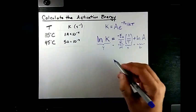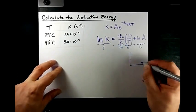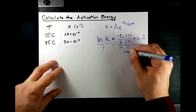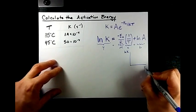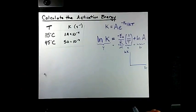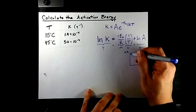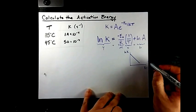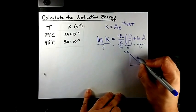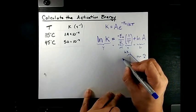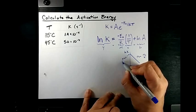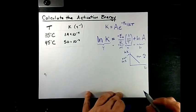If you make a graph and you put ln K on the y-axis and you put 1 over T on the x-axis, you will get a straight line that has a slope of negative EA over R and it happens to have a y-intercept of ln A.